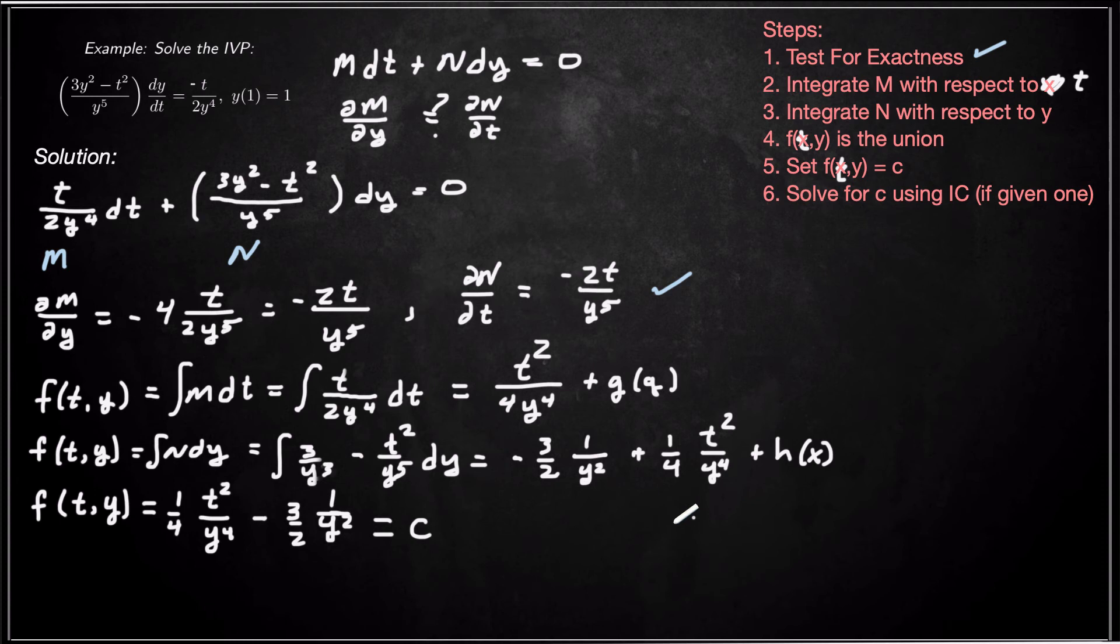And now we can actually solve for that constant using our initial condition. So if y(1) equals 1, then that tells us that if we plug in t equals 1 and y equals 1, we get 1/4 minus 3/2 equals c. So that tells us, find a common denominator, multiplied by 2, so we get -5/4 is equal to c. So c is -5/4.